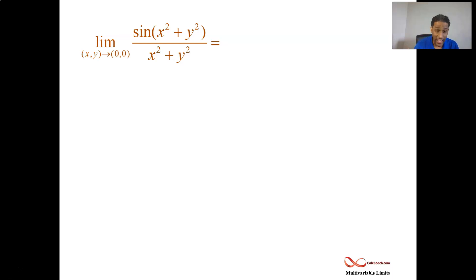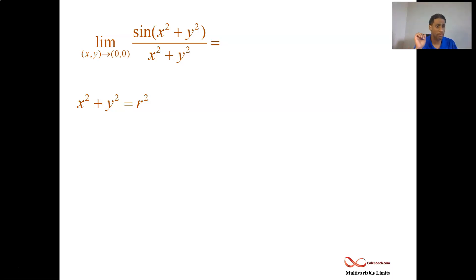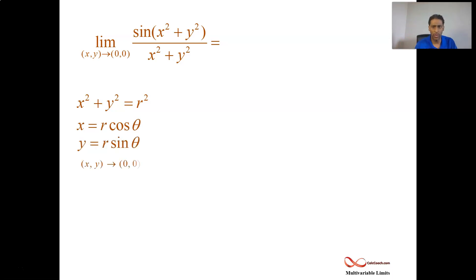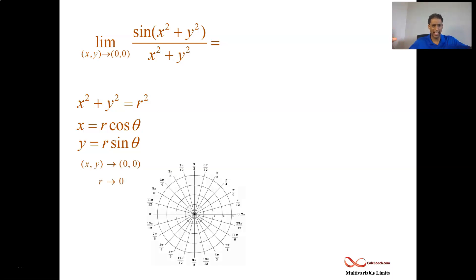One technique is to jump into polar. If you see x squared plus y squared, that's equal to r squared. You can recast your limit, replacing x squared plus y squared with r squared. What about x, y headed towards the origin? In polar, x is r cosine theta and y is r sine theta. So when (x, y) is approaching the origin, r is approaching zero — r is the radial distance outward from the origin. No matter what the path is, all the radii are shrinking down to zero.